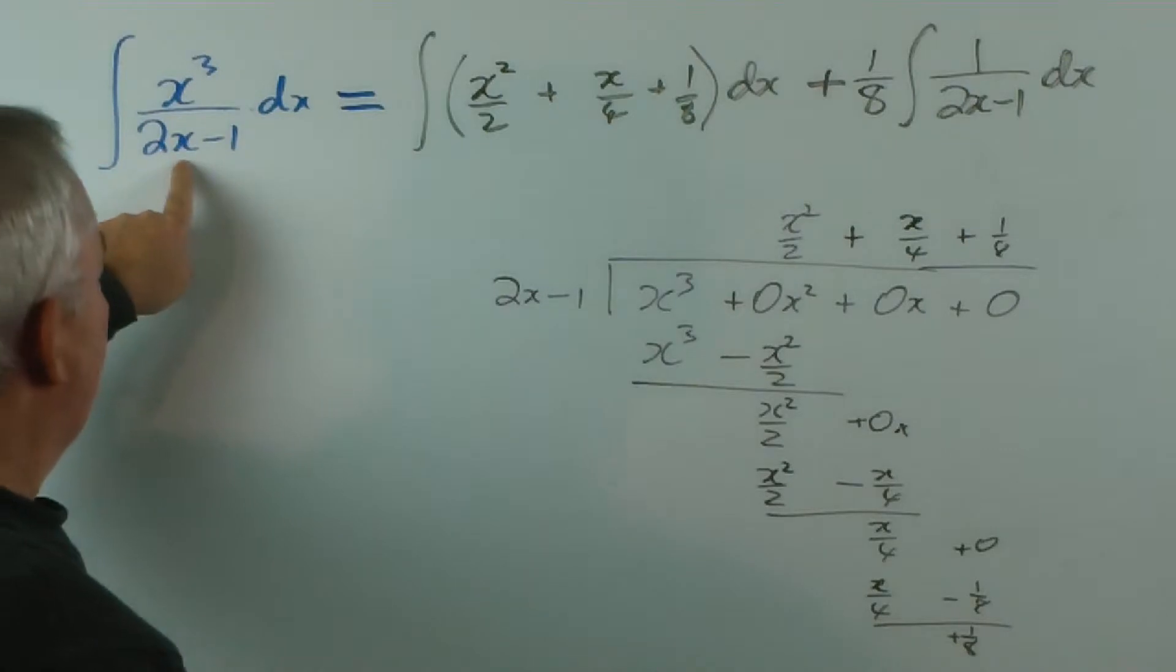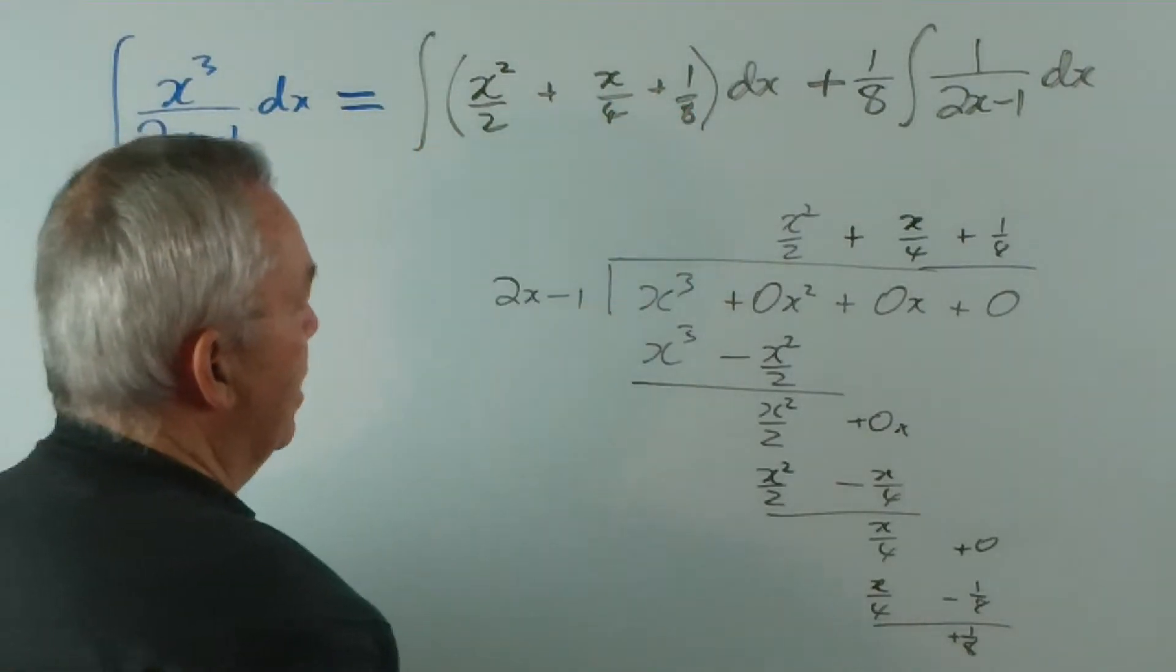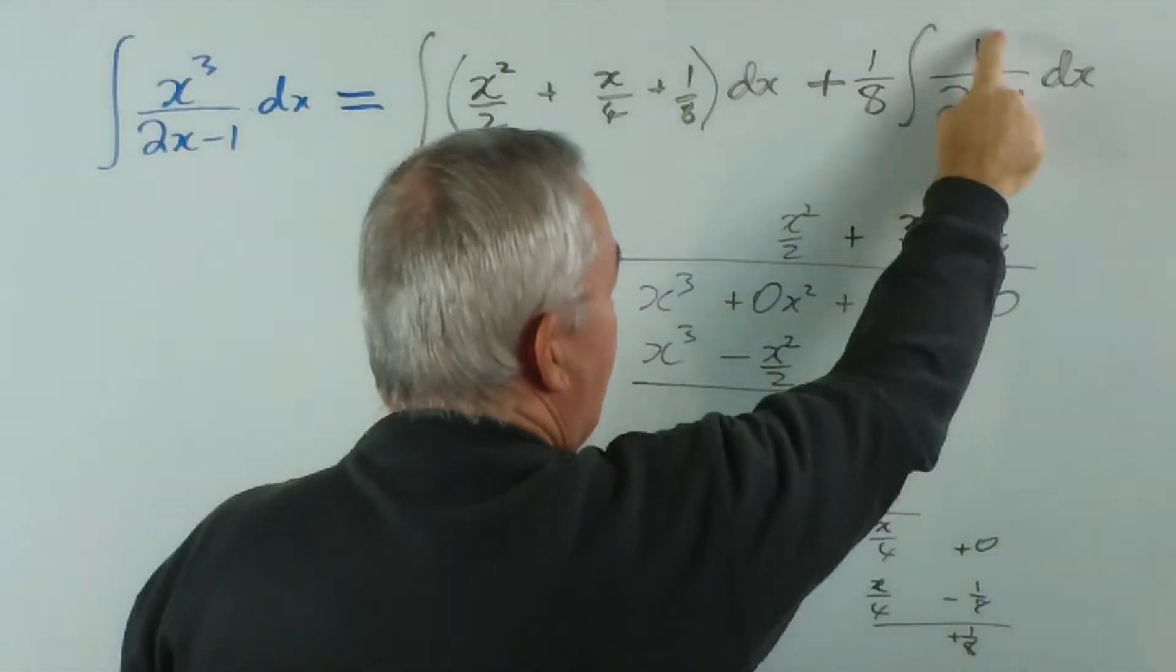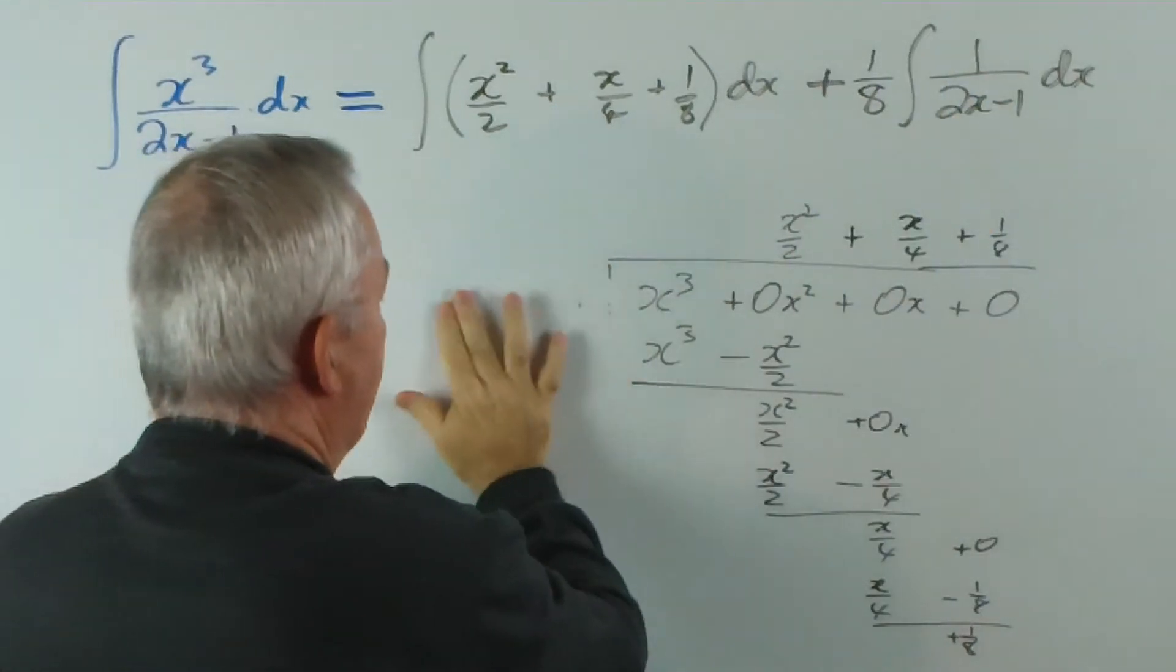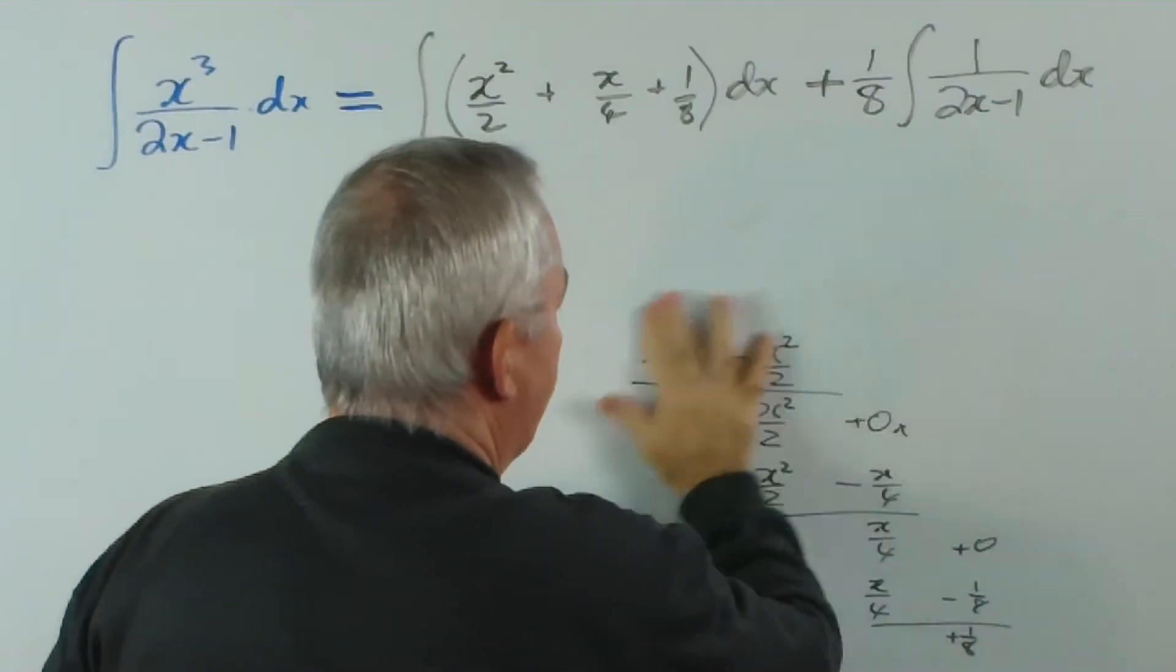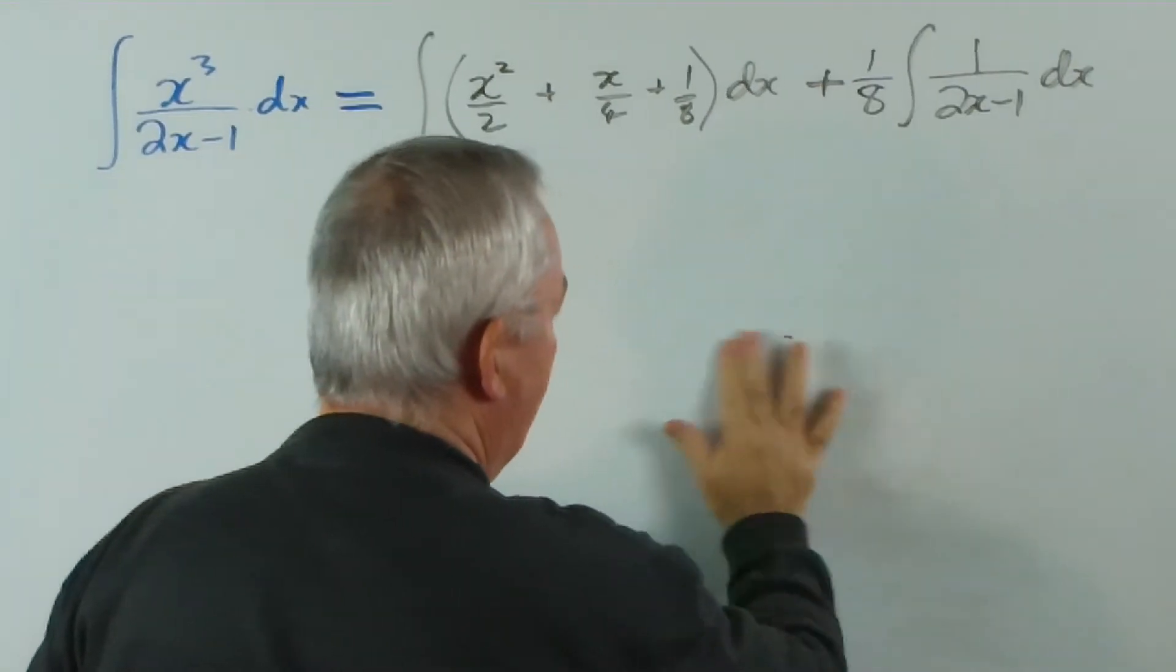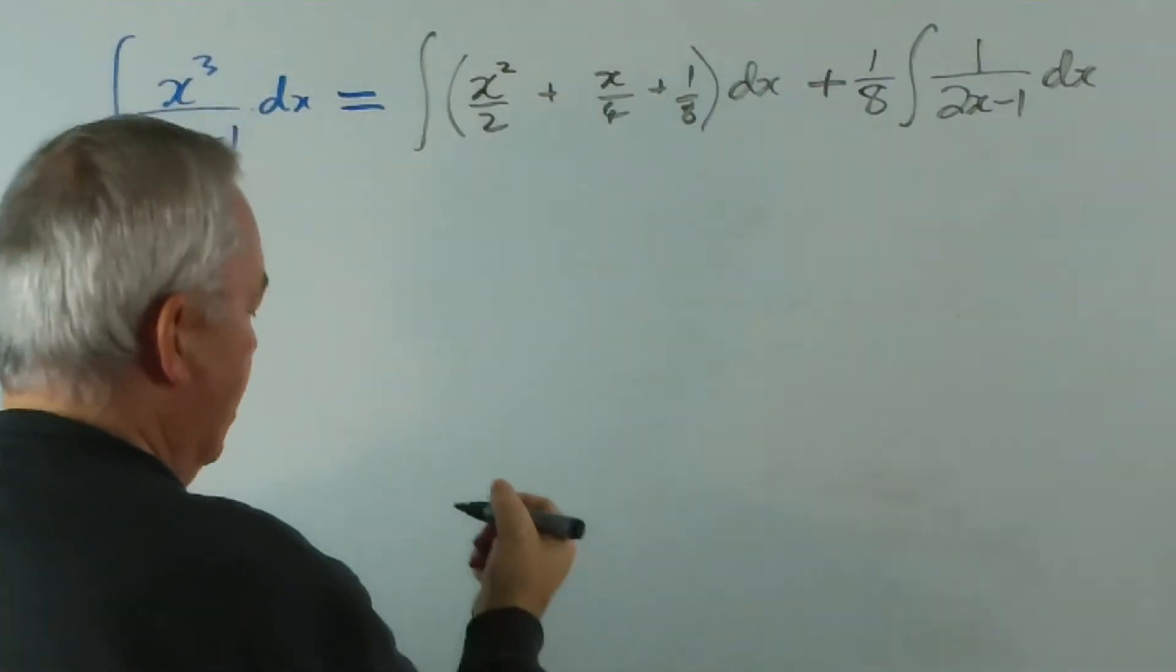Because this was a cube and this was simply a linear function, we got a quadratic. And we're left with our remainder that's going to provide a logarithm for us. So, let's just remove this now, as best I can, with my high-tech fingers. And we'll continue.